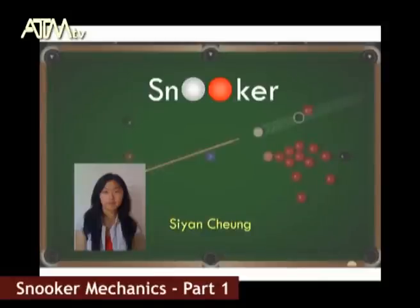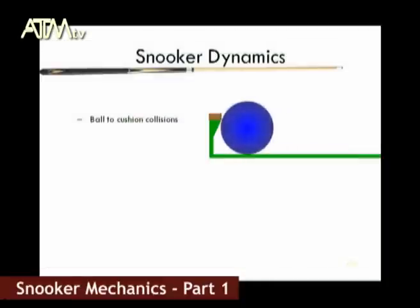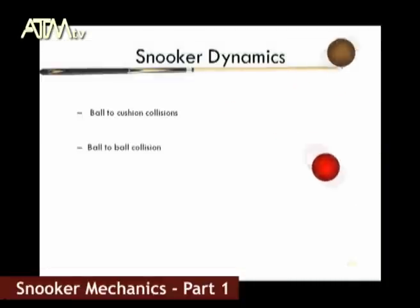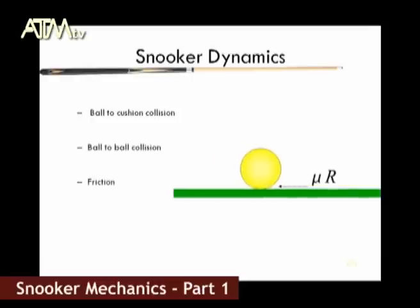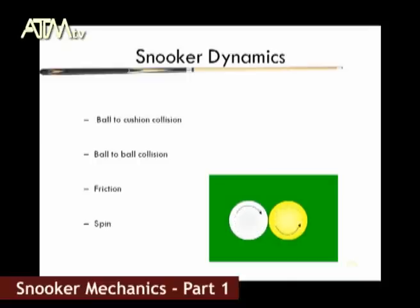This presentation takes you through specific elements of the dynamics involved in a game of snooker. One may have always been amazed by the way a snooker player is capable of manipulating balls on a snooker table, potting balls after balls and positioning them in line for the next shot. Whilst this is intuitive to them, we can explore this mathematically: ball to cushion collisions, collisions between balls, friction between the ball and the table surface, and spin transfer between balls, which is a very complicated matter.